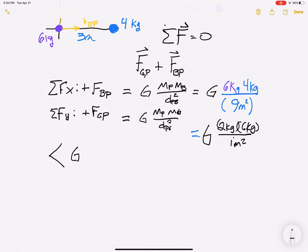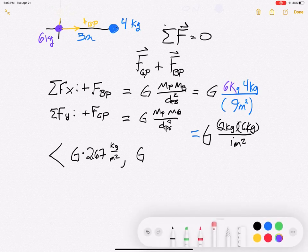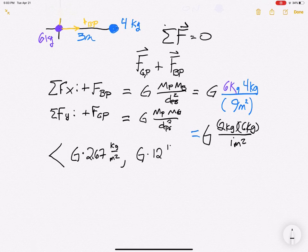So we're going to get G and 2.67 kilograms meters squared, comma, big G times 12 kilograms squared over meter squared. So we can express it in this format.